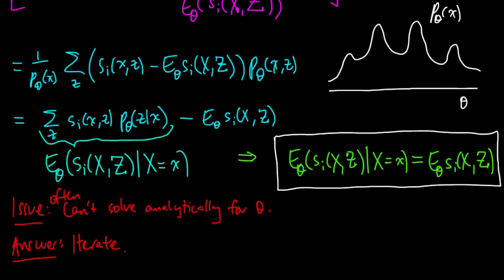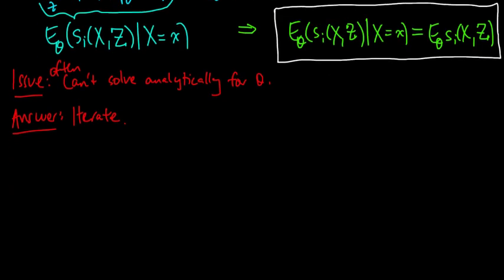One iterative procedure we could use is the following. We could break apart the thetas here — call one of them theta_0 and the other theta_1 — and then solve for theta_1 as a function of theta_0. Then we could set that side equal to theta_1 and solve for theta_2 as a function of theta_1. That would be an iterative procedure.